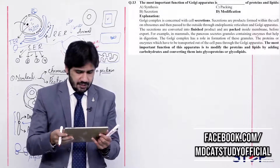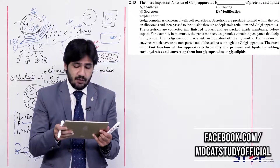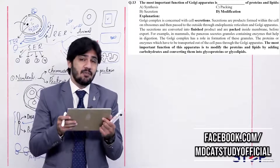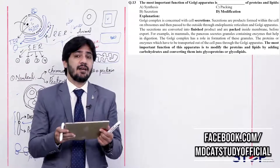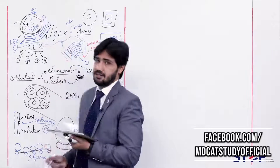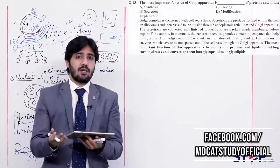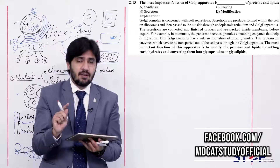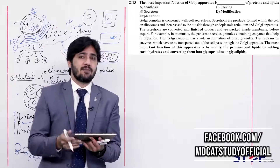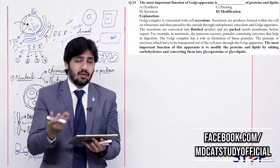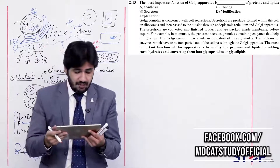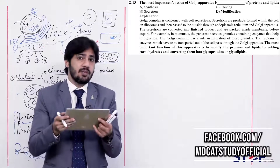Question 13: The most important function of Golgi apparatus is blank of proteins and lipids — (alpha) synthesis, (beta) secretion, (charlie) packing, (delta) modification. The Golgi apparatus is related to cell secretion, but synthesis occurs in SER and RER. Within the Golgi apparatus, materials are modified — carbohydrates are attached to proteins and lipids, converting them into glycoproteins and glycolipids. This modification is the most important function. So the answer is delta — modification.